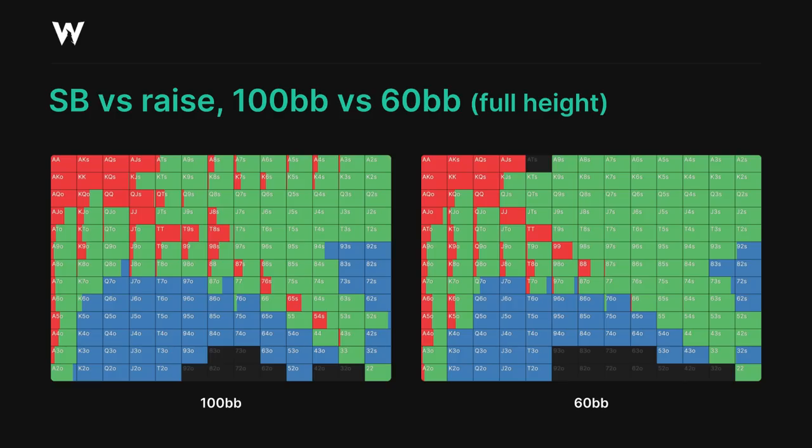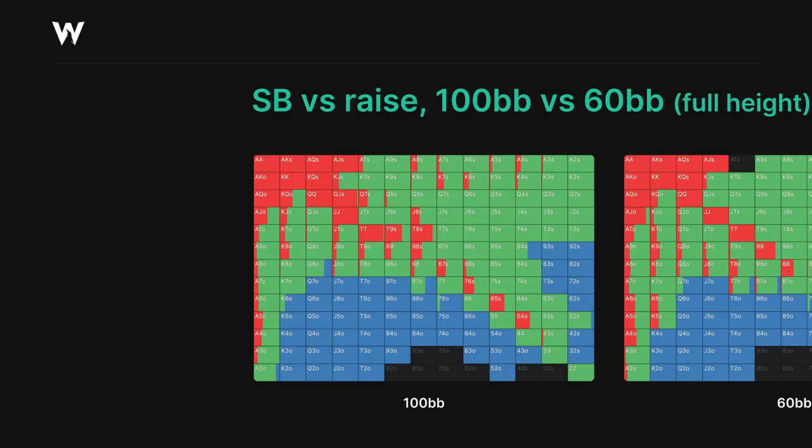In addition, the slightly shallower stacks mean that we're able to limp call with almost any suited hand which limped in the first place, while pairs like 9s and 8s are now slightly more willing to limp 3-bet in order to play for stacks.